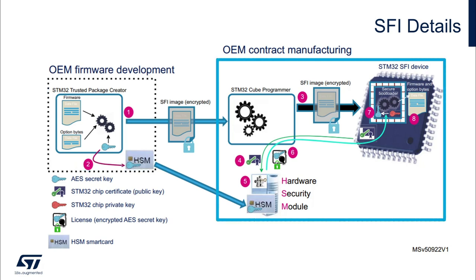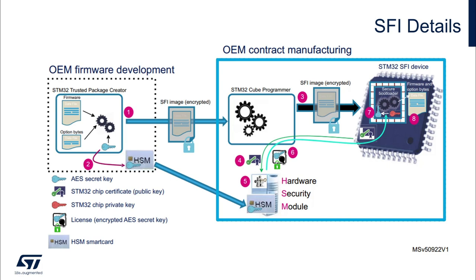The second phase of the process takes place at the contract manufacturer, which receives from the OEM the encrypted SFI package and the HSM card. The manufacturer is then responsible for installing the STM32 firmware to the device. In Step 3, the STM32CubeProgrammer initiates the SFI process. In Step 4, it asks the STM32 for its unique certificate.